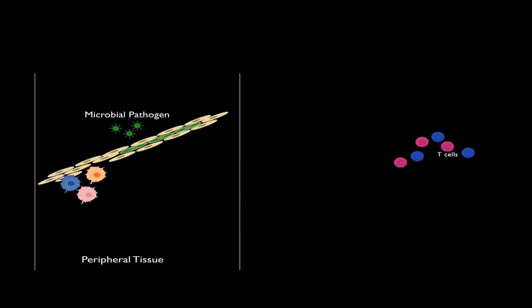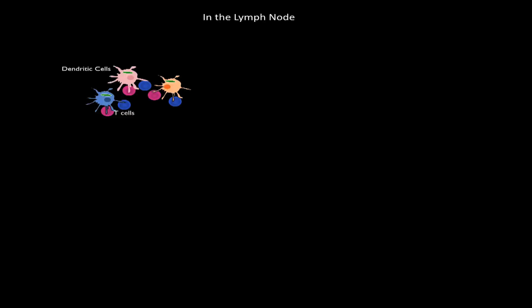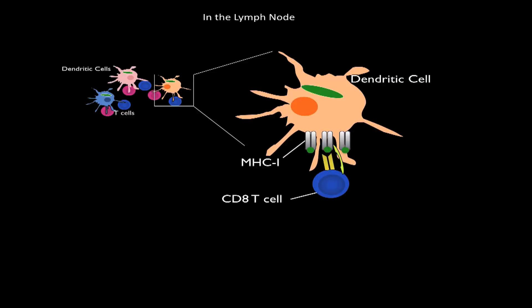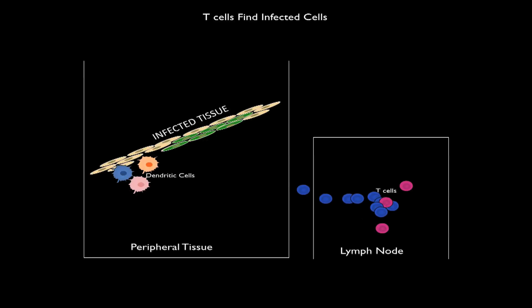To solve that problem, the immune system makes use of specialized cells called dendritic cells, which chew up infected cells and then migrate to the lymph nodes where T cells are concentrated. There, T cells recognize their cognate peptide presented by such dendritic cells and get activated, divide and expand in number. The T cells then migrate out of the lymph node. Because their numbers have greatly increased, the chances that those specific CD8 T cells will find the infected cells and kill them are now much improved.